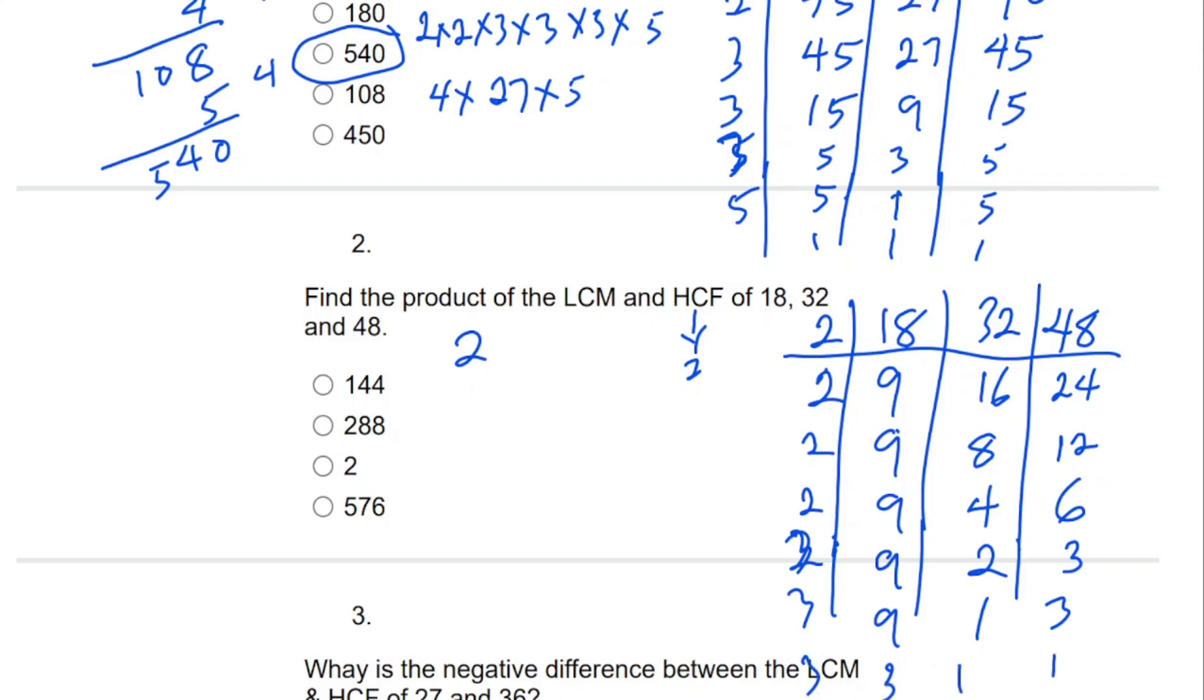We have 3 in 2 places and 2 three times. 2 times 2 times 2 is 8, times 2 is 16, times 2 is 32. That is 32 times 9, which is 3 times 3. 9 times 2 is 18, carry 1. 9 times 3 is 27, that is 28. Let's multiply by 2 now. 2 times 8 is 16, carry 1. 2 times 8 is 17. Then 576. So this is the answer.